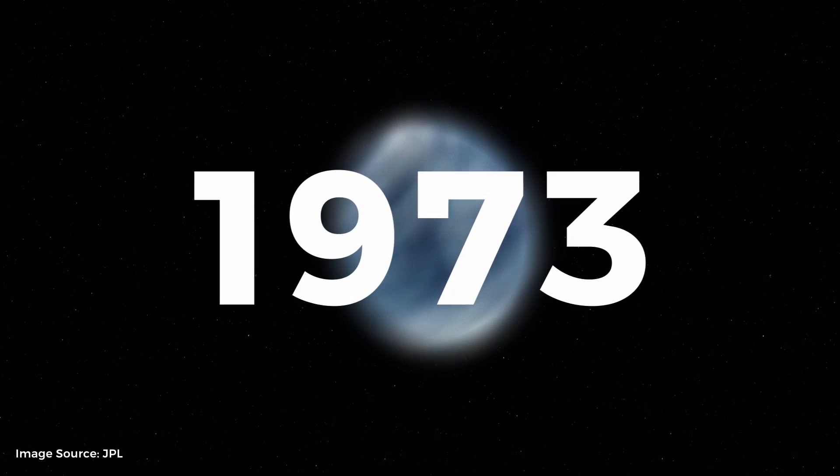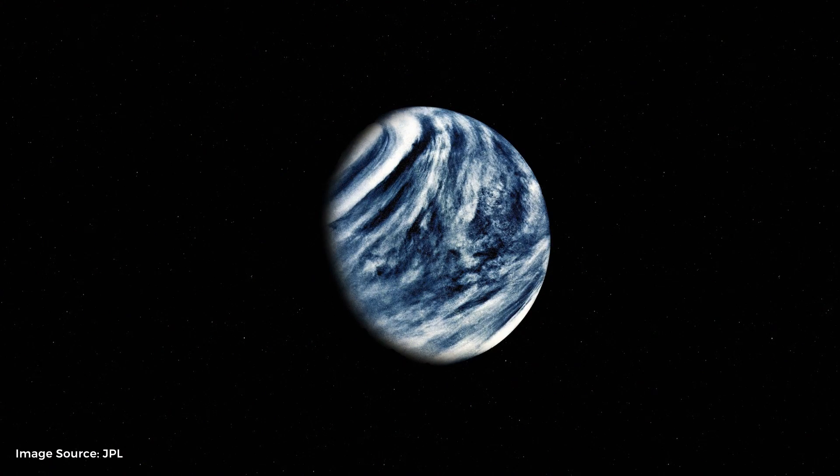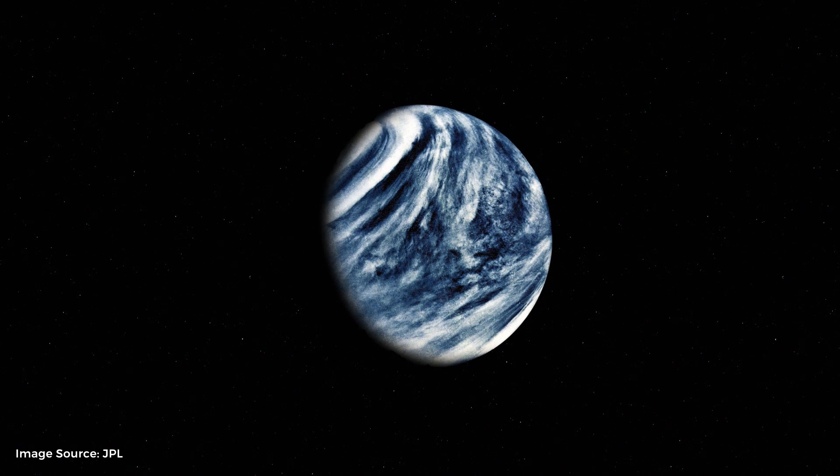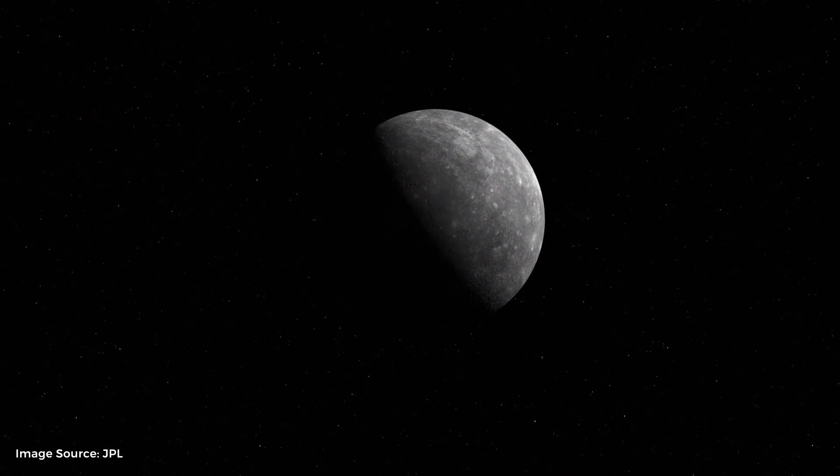On November 3rd 1973, the Mariner 10 probe set sail for Venus where it gave us our first close up look of the planet, all the while lending its gravity to boost the probe's velocity to its next destination, Mercury.